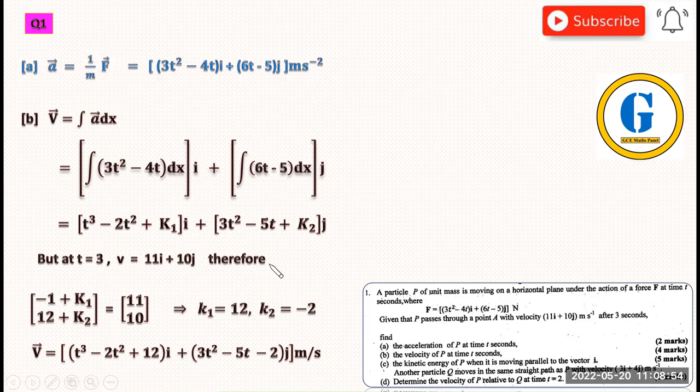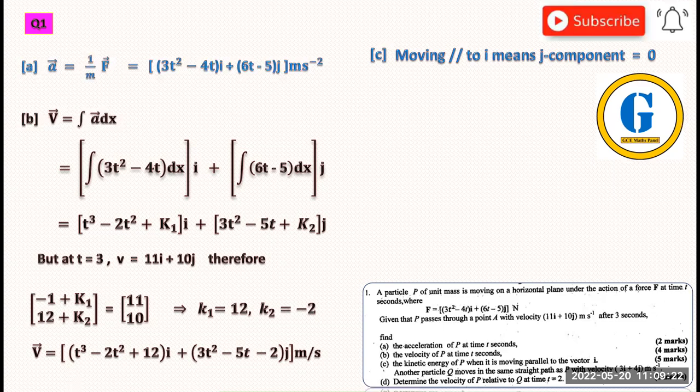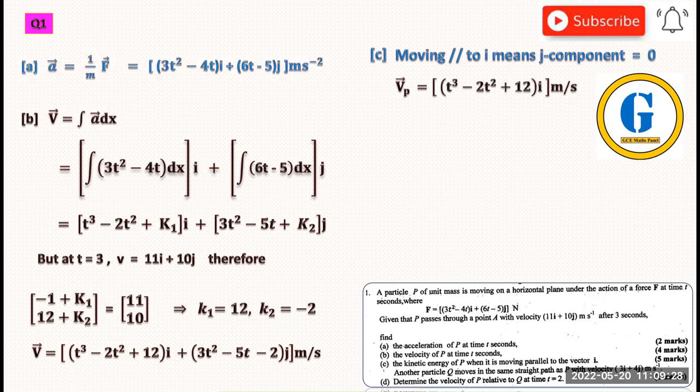For part (c), we need to find the kinetic energy of particle P when it is moving parallel to the vector i. When the particle is moving parallel to i, the j component equals zero. Therefore, we only consider the i component. Kinetic energy is given by ½mv².